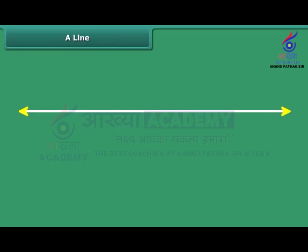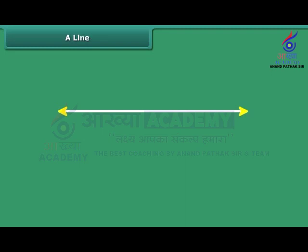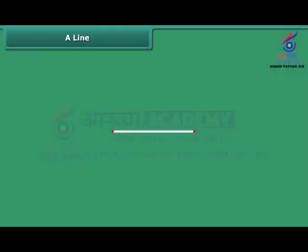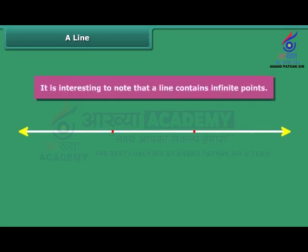When the end points of a line segment are extended in both directions without any limit, it becomes a line. To represent a line on paper, we put arrows at both sides of the line segment. You can represent a line by drawing a line over the two points representing it, for example AB. A line is also frequently given by single letters like L, M, N, etc. We can represent a line or line segment by two points. It is interesting to note that a line contains infinite points.